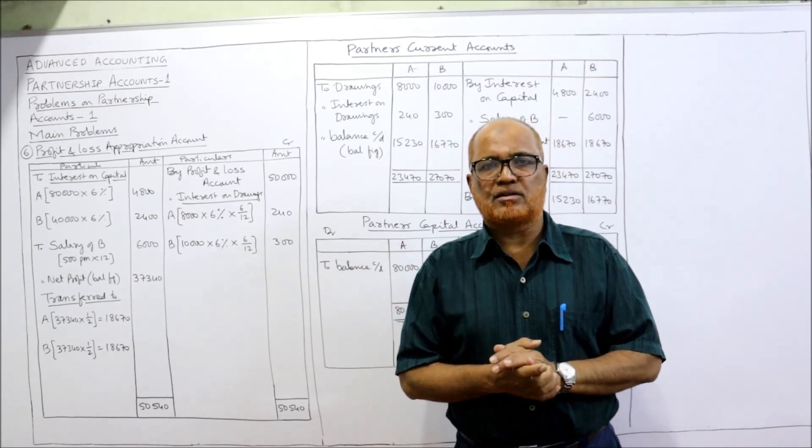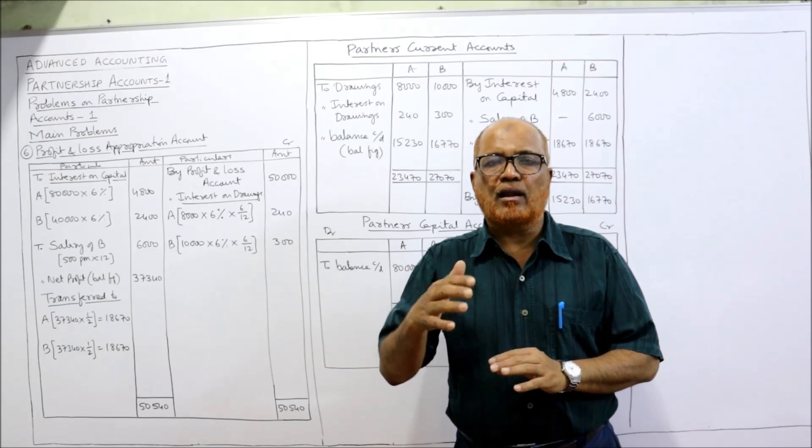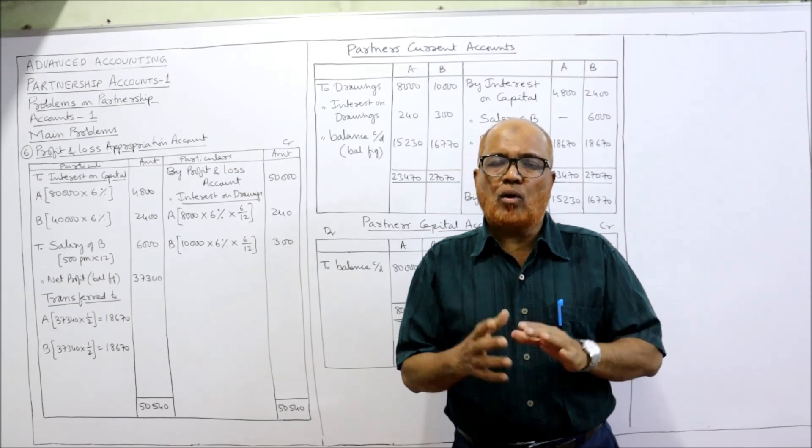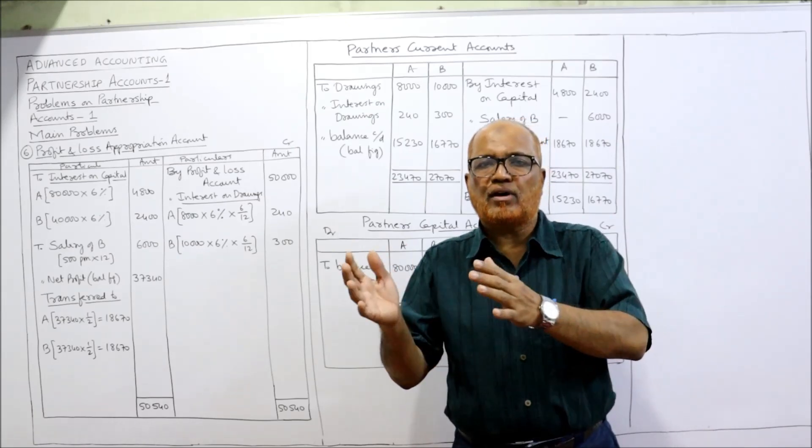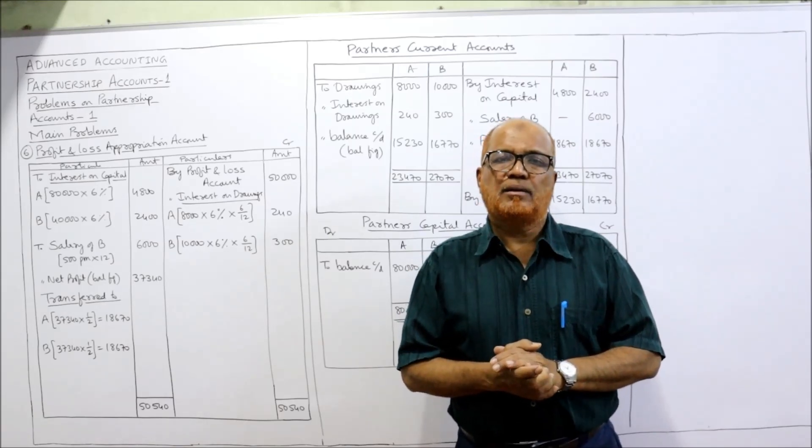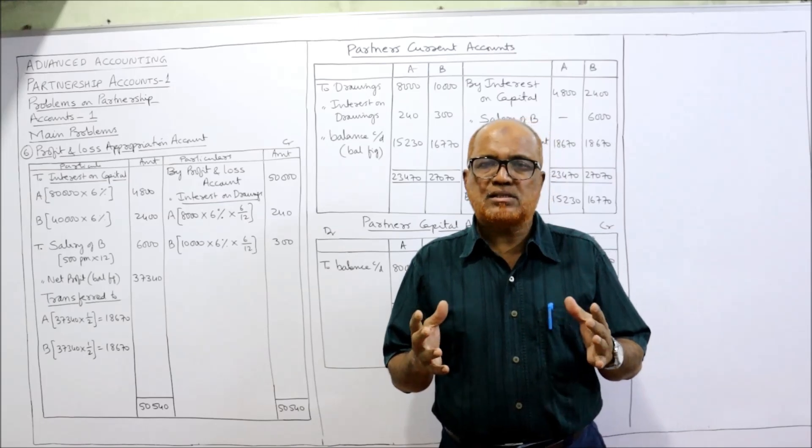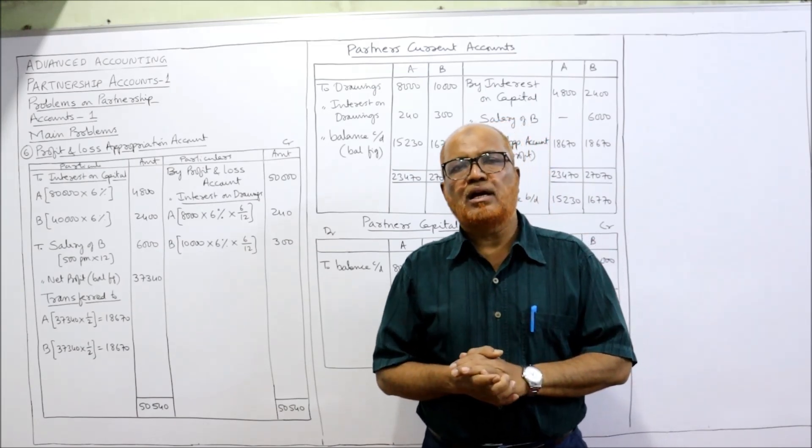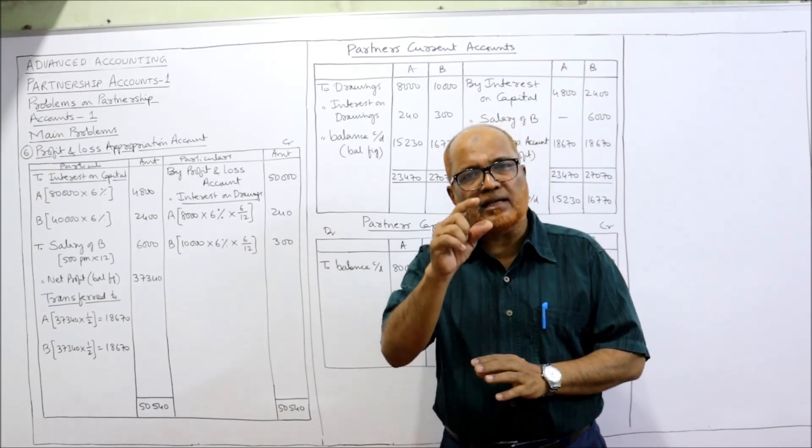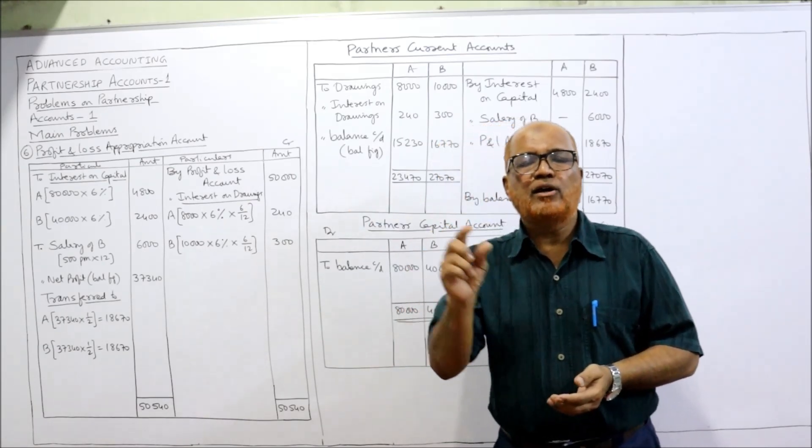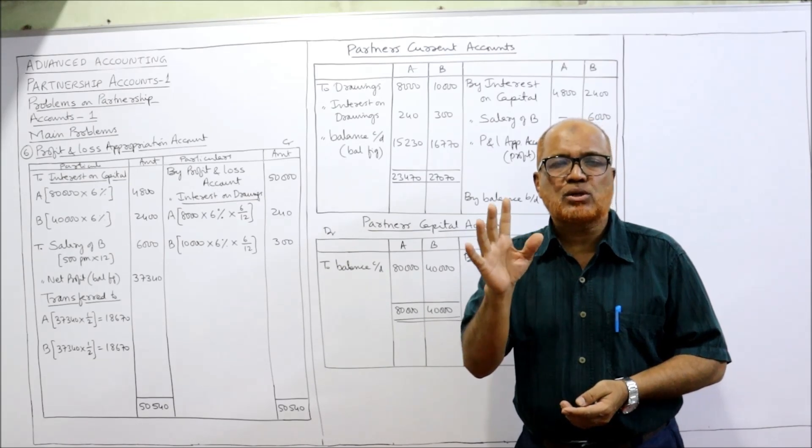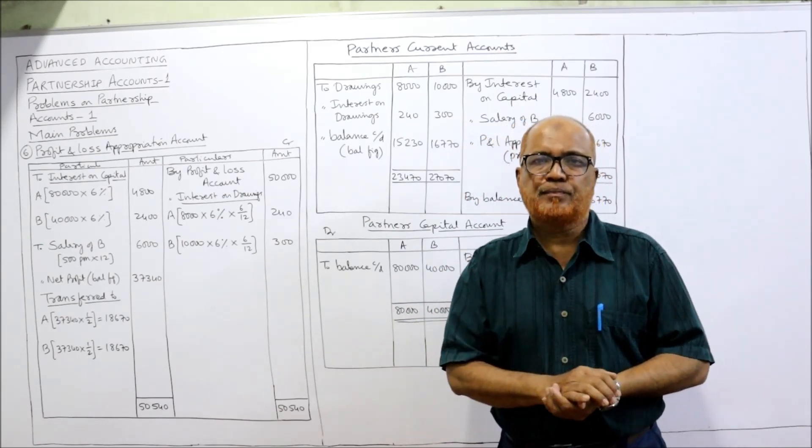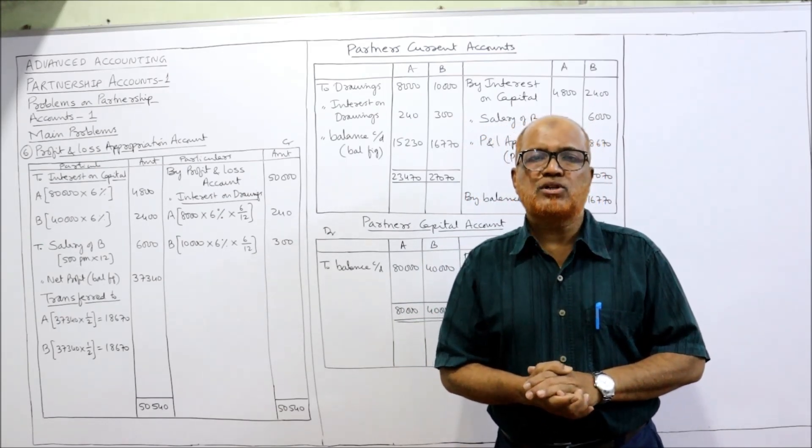From next video onwards we start the problems on admission of partner: what are the adjustments to be made when a new partner is admitted, treatment of goodwill, revaluation of assets and liabilities, distribution of accumulated profits. All these adjustments are required whenever a new partner is admitted, particularly regarding goodwill. So all these things theory I have explained in the first initial videos. So if you have not watched the earlier videos, I suggest you go to the playlist of my channel, select the subject advanced accounting, select the videos of partnership accounts. One video is exclusively on adjustment on admission of a partner. So inshallah will continue the problems on admission in the next video.